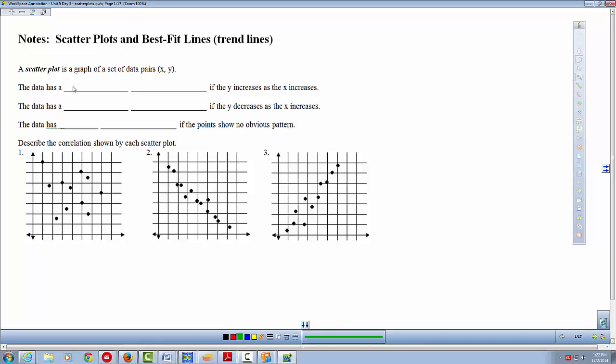The data has a positive correlation if the y increases as the x increases. If the y decreases as x increases, we will have a negative correlation. And the data will have no correlation if the points show no obvious pattern.